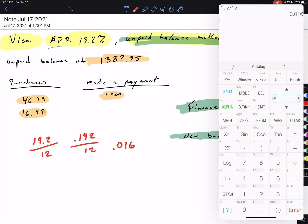And we're left with a monthly charge of 0.016. So that's our monthly percentage rate. So to find our finance charge, we're going to take our unpaid balance times that.